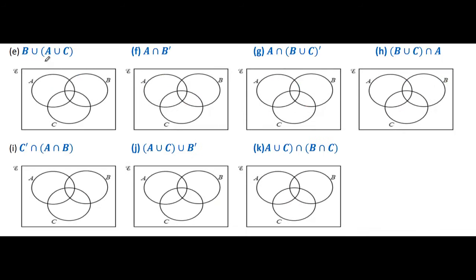Now we have to identify A union C as a whole. A union C means A and C. This is A, this region also belongs to A. This region belongs to C and this region also belongs to C. Now we have identified A union C here.